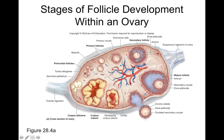This leads to multi-generational effects. The cells that would later become us started to develop while our mothers were developing within our grandmothers — so how your grandmother lived can actually affect you as a grandchild, since those cells were at some point within your grandmother. There are about 100,000 primordial follicles per ovary. After puberty, these primordial follicles start to develop in response to hormones, typically several at a time.